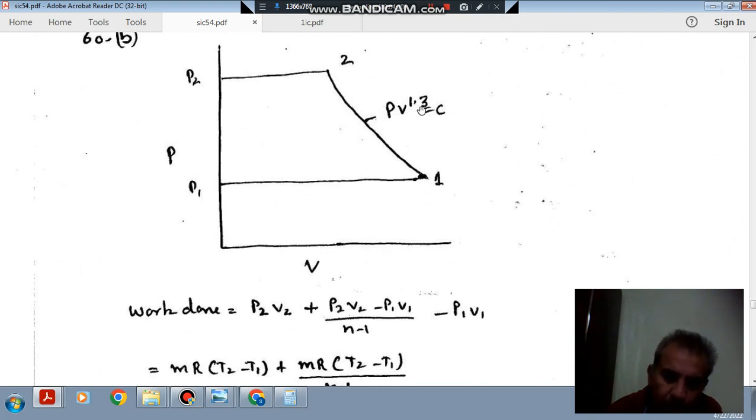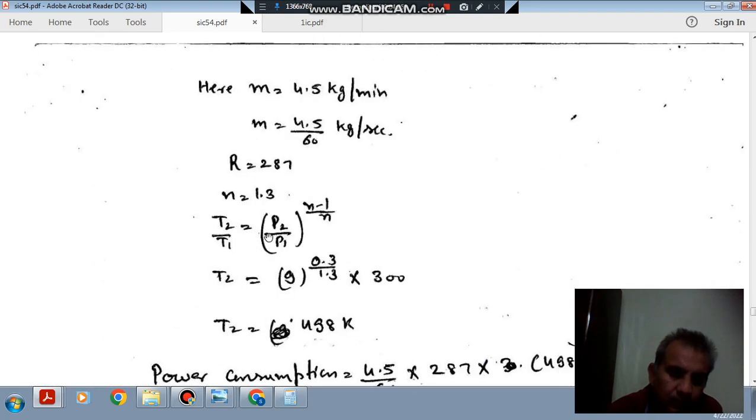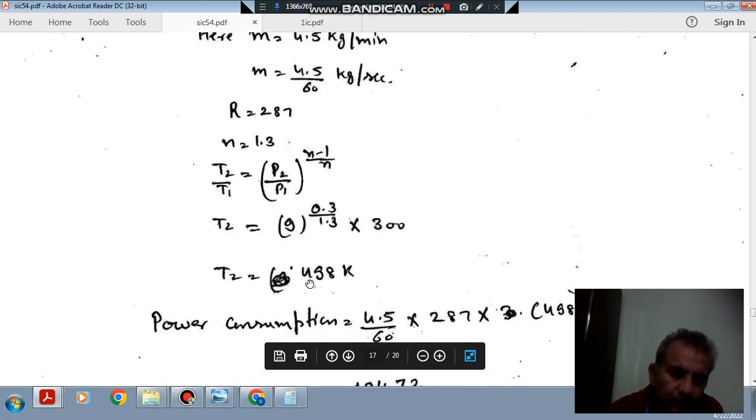Using that PV^1.3 is constant, we can find T2. So T2 by T1 equals (P2 by P1)^(N minus 1 by N). This ratio is 9, so that is 0.3 by 1.3, so T2 will be 498 Kelvin.